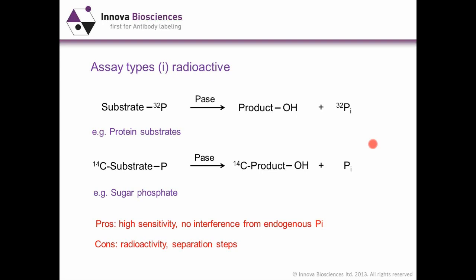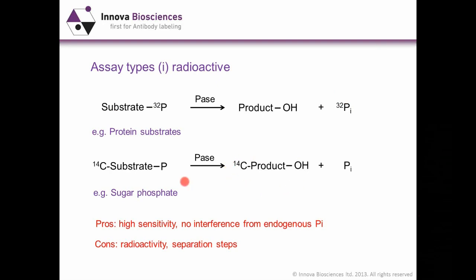The next three slides show some of the assay types that one could use to measure phosphate generating enzymes. First, radioactive: P32 labeled substrate produces P32 inorganic phosphate. This is quite commonly done, particularly with protein substrates. It's not a fantastic assay for high-throughput screening because of the radioactivity. In some cases the radioactivity can be on the carbon backbone, generating a C14 specific product. The pros are high sensitivity and no interference from endogenous PI. The cons are, obviously, radioactivity, and you will always need a separation step to separate the product from the remaining substrate.